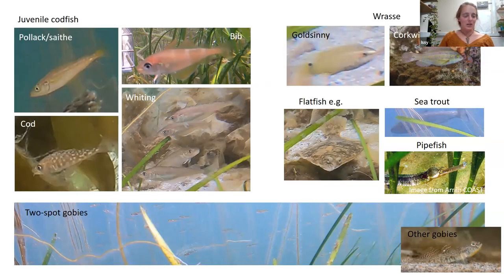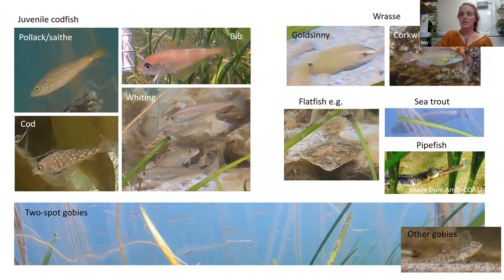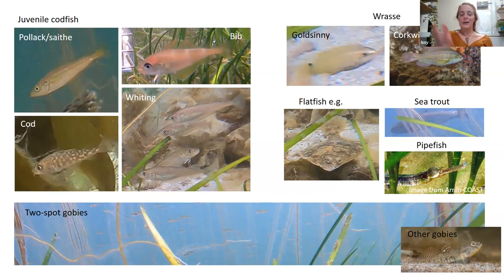Here's a preview of the kinds of fish I was seeing in the video. The top left shows different types of cod fish — all juveniles, as seagrass acts as a nursery. We've got pollock, bib, cod — which I think are the cutest — and loads of whiting. This varied hugely with time of year — later in the season there were many more fish. Also visible: different types of wrasse, including goldsinny and corkwing, a few flatfish including dab, and sea trout.